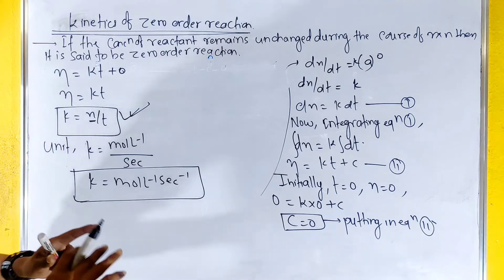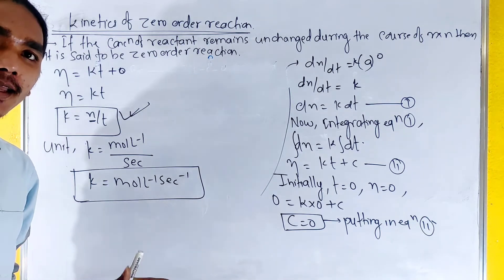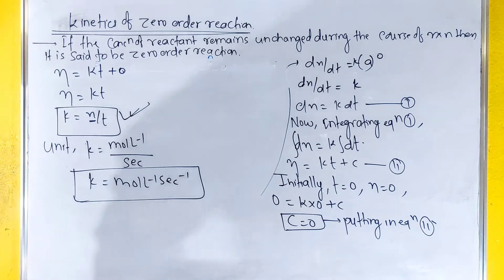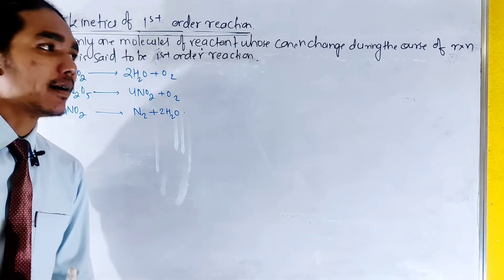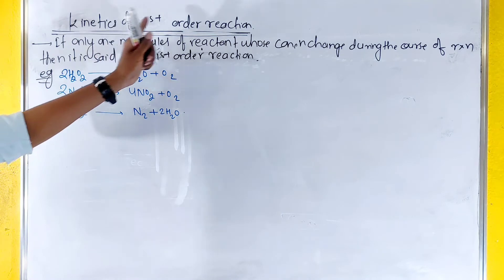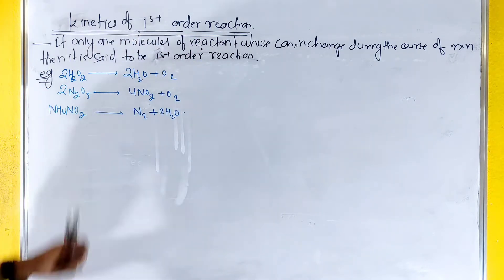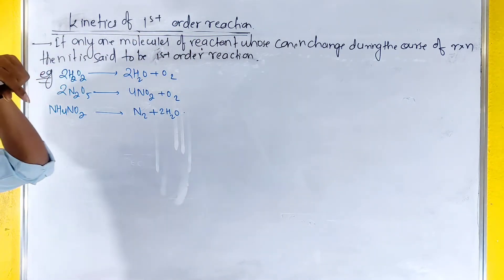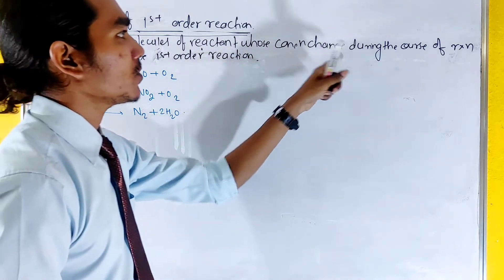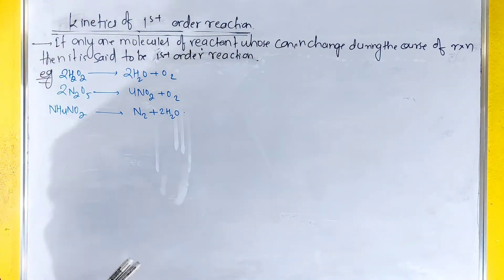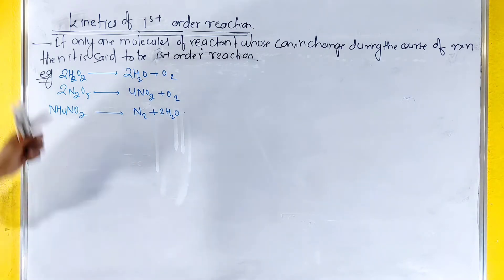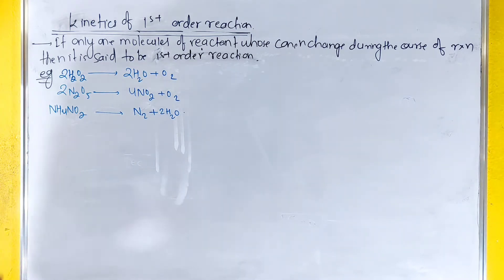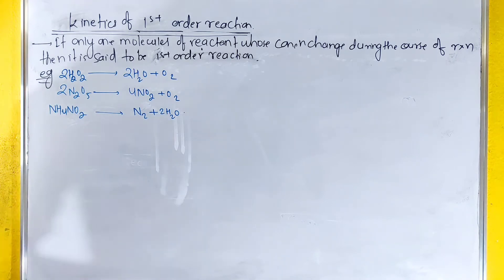We now complete the first order of zero. Now we discuss the mechanics of first-order reactions. If only one molecule of reactant whose concentration changes during the course of reactions, only one molecule of reactant has changed — that is first-order reaction. An example is N2O2 dissociation.